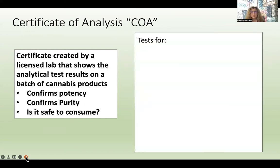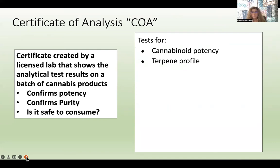What does it test for? We see tests for cannabinoid potency — how much THC, how much CBD, how much CBDA, how much CBG, and so on in terms of the cannabinoids. What's the terpene profile? Terpenes are the essential oils in the plant. They synergize with the cannabinoids to give benefits — to enhance sleep, reduce anxiety, reduce depression, and help with pain. So it's very important to know the terpene profile of any product that you're using.